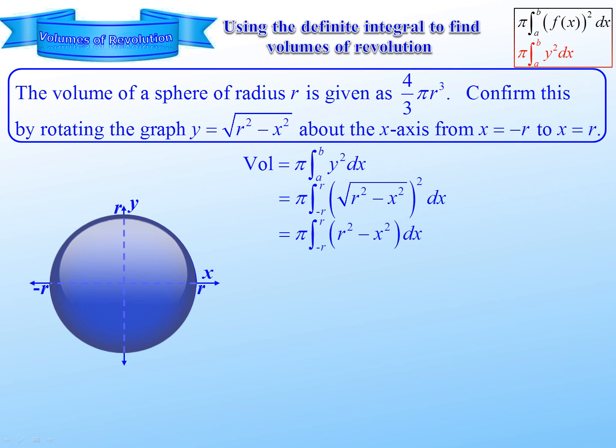r squared we treat as a constant. It's as if it was just a number there, which means we'll end up with r squared x minus x cubed over 3 from negative r to r.